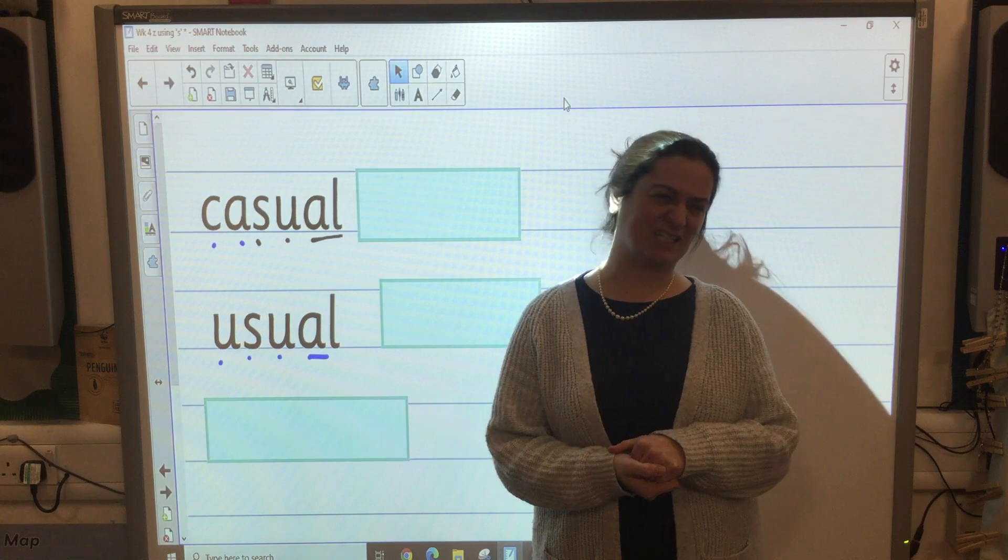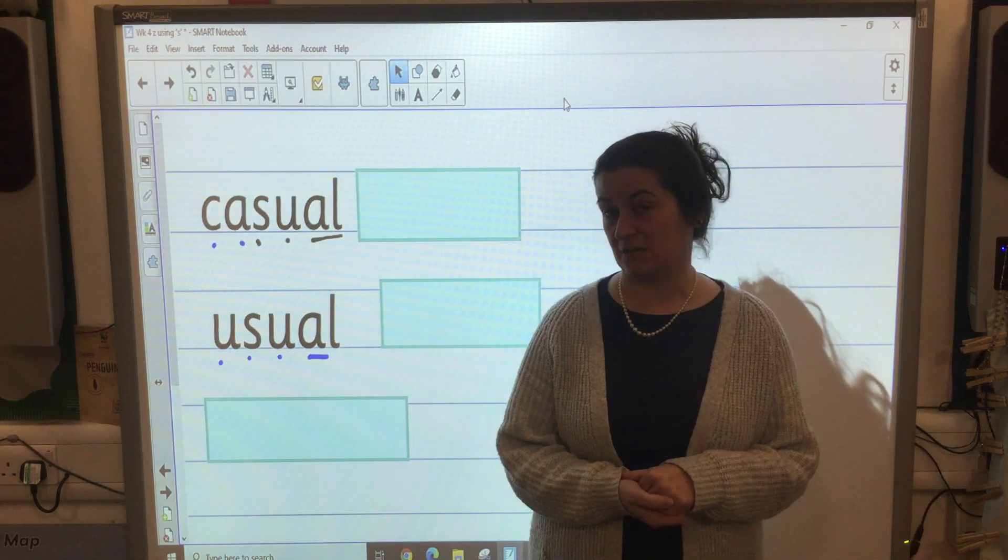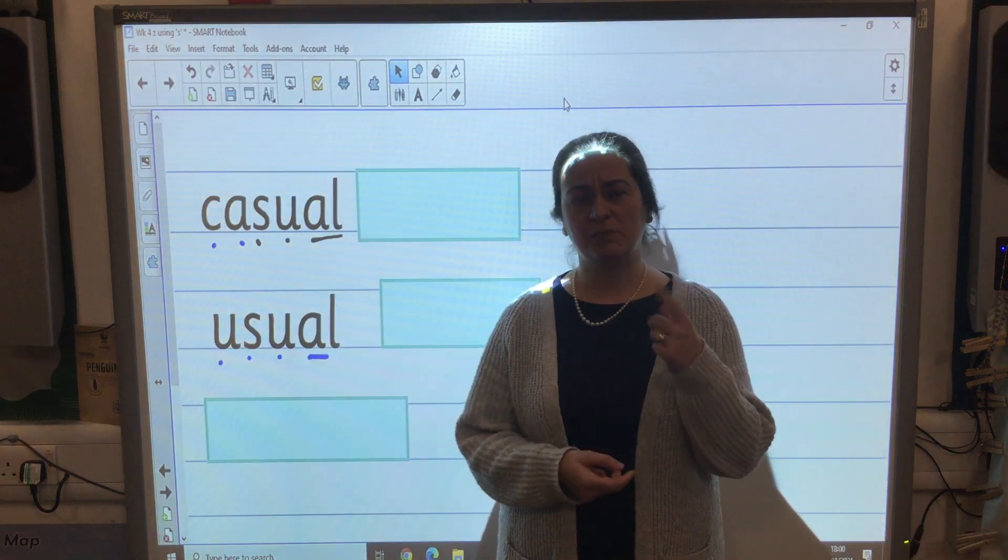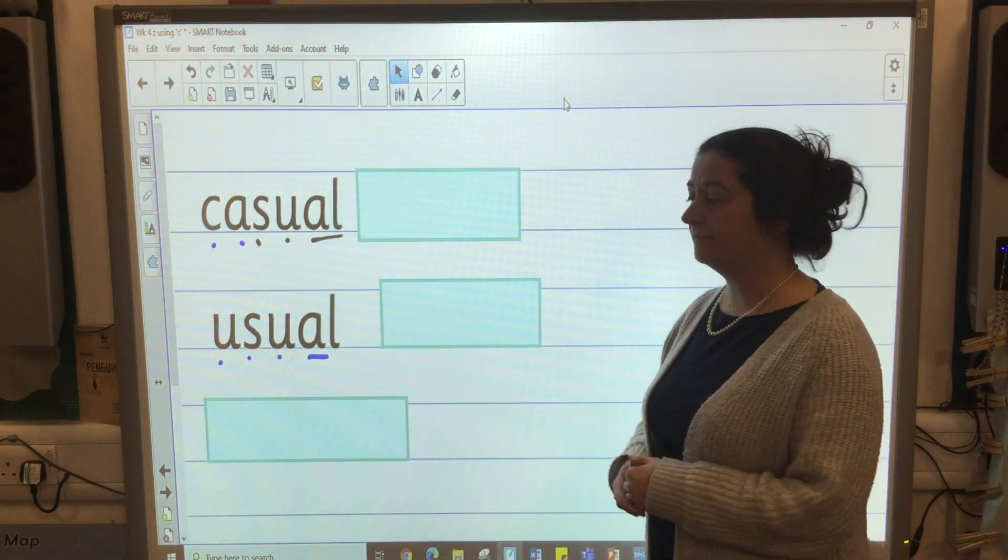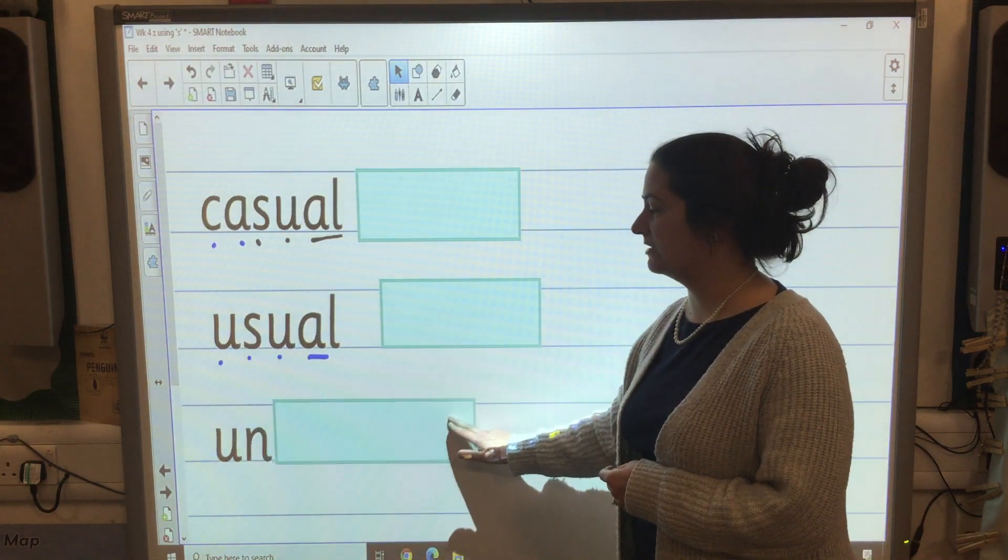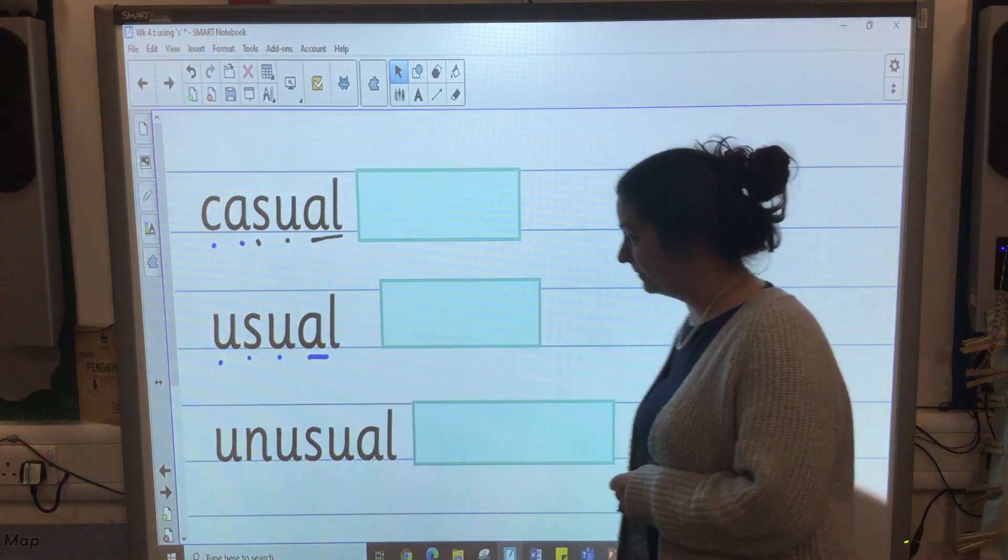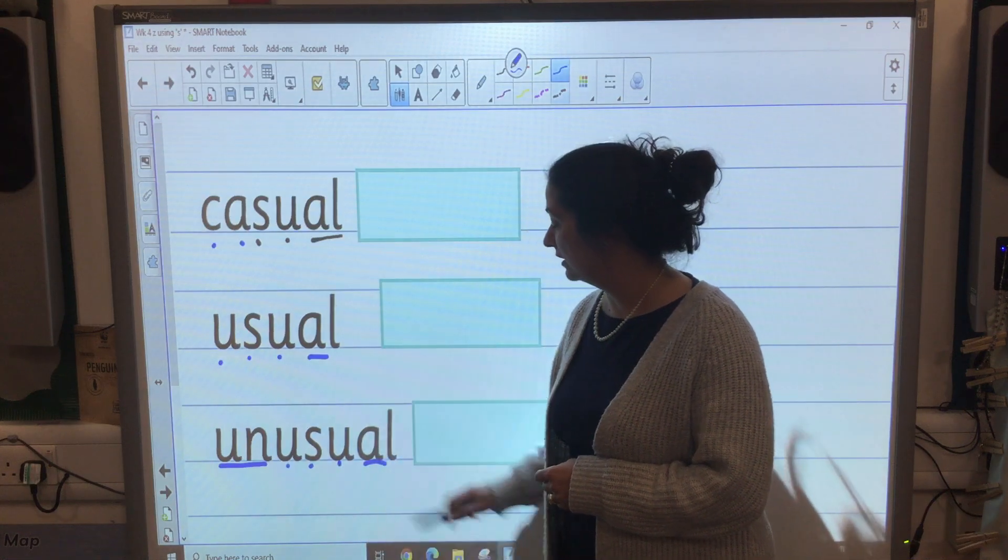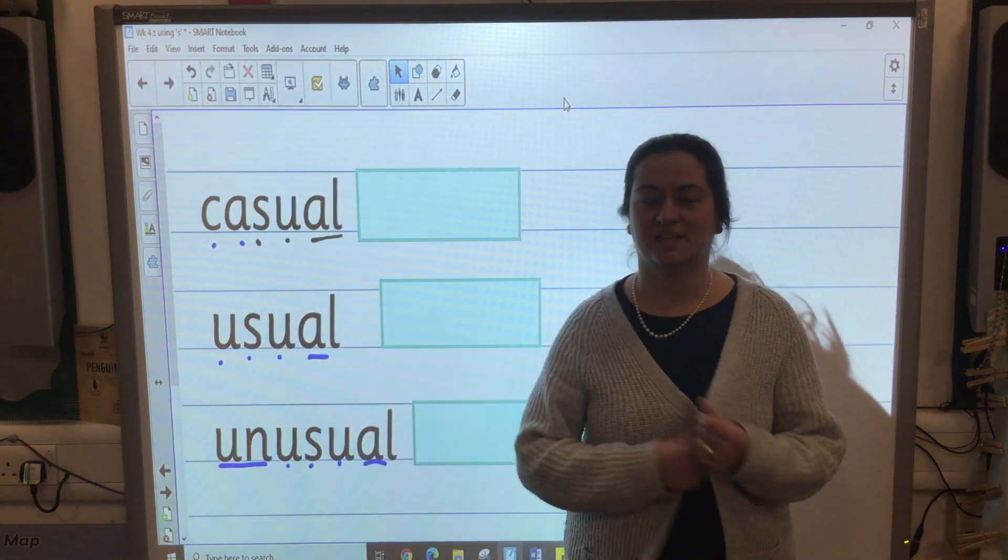The next word is unusual. It's not usual, it's not normal. It's unusual for me to have a cup of coffee. I do sometimes, but it's unusual. Can you hear the prefix 'un'? Do you know how to spell usual? Unusual. Have a try. Check and change. Have you got the prefix 'un'? Have you got usual like we had before? Here's our prefix u-n-u-s-u-a-l. 'Un' means not. It's not usual.